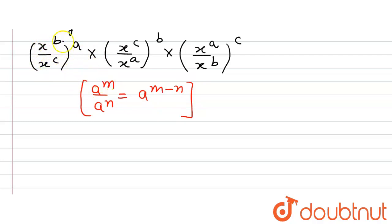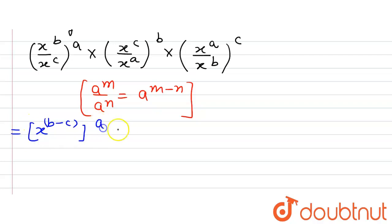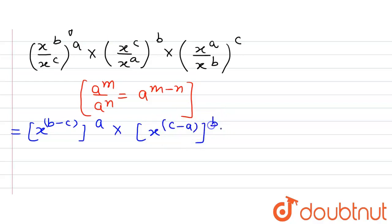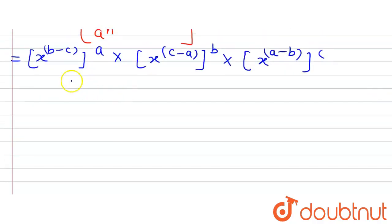Here a is x, m is b, and n is c. So x^b / x^c can be written as x^(b−c), and that whole expression is raised to the power a. Similarly, x^c / x^a becomes x^(c−a) raised to the power b, and x^a / x^b becomes x^(a−b) raised to the power c.